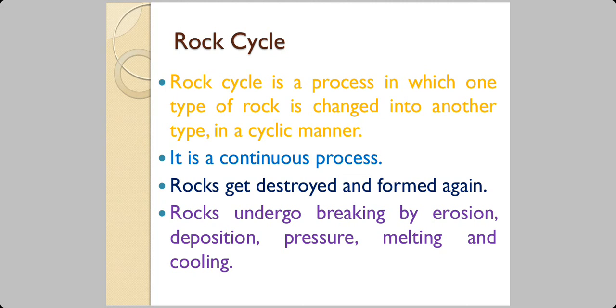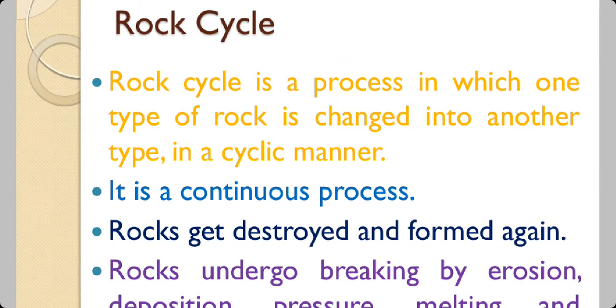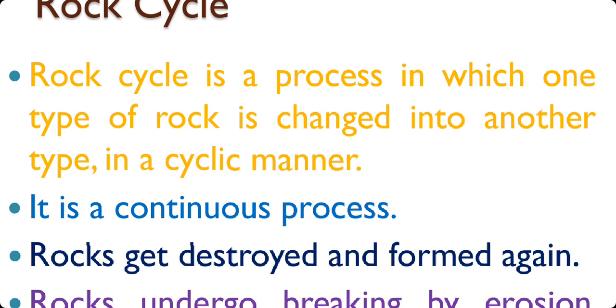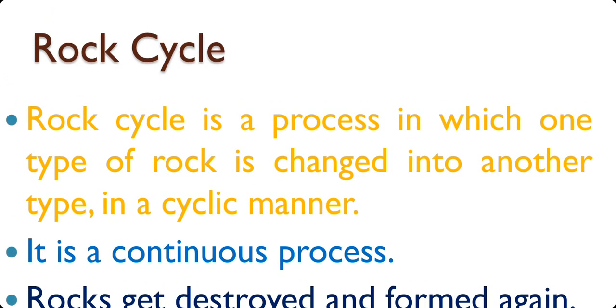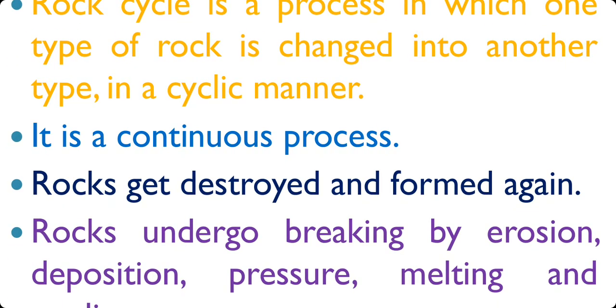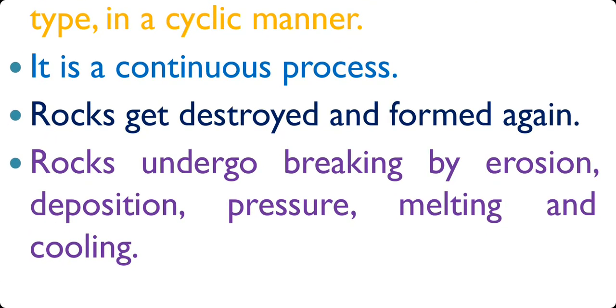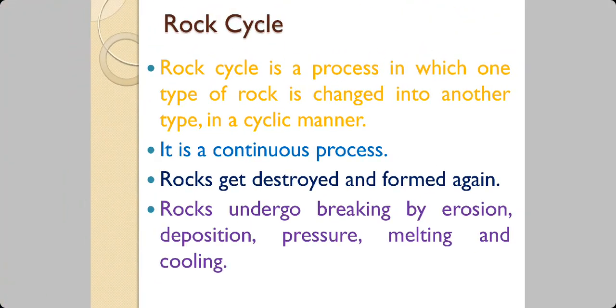Now just like you have read about the water cycle last year, we have something similar known as rock cycle. This is a process in which one type of rock is changed into another type in a cyclic manner. It is a continuous process. It is a slow process but it is a continuous process. If you look at a piece of rock outside your house, it does not appear to us that it is changing into something else. Rocks get destroyed and formed again. This is happening in the rock cycle. Rocks undergo breaking by erosion, deposition, pressure, melting and cooling and this changes them.